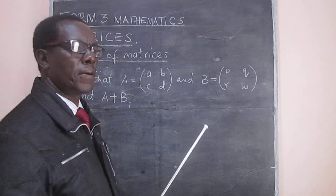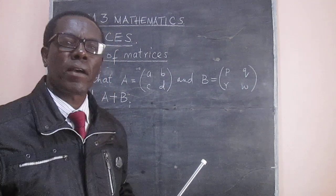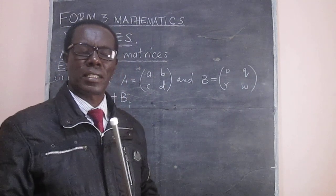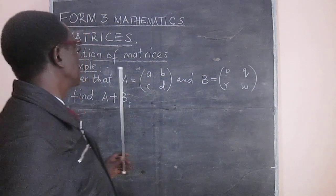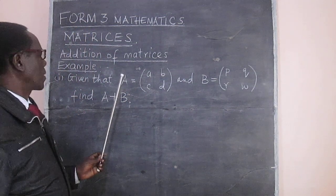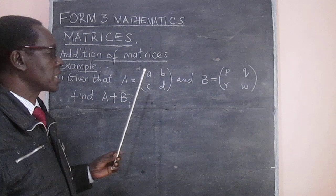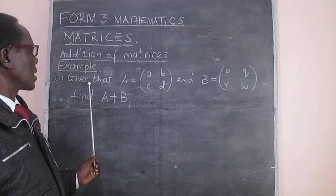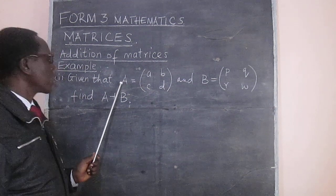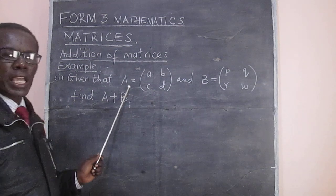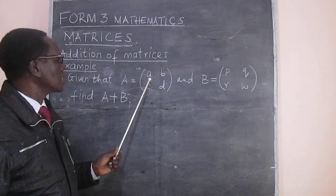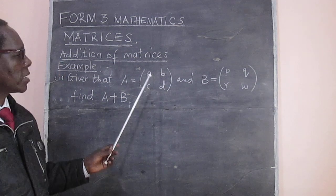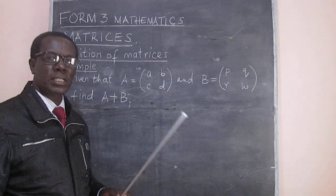We want to start with the addition of matrices and I already have an example here. Given that A — that is matrix A — equals A, B, C, D, that is a 2 by 2 matrix.